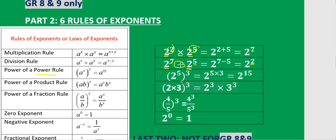Then we have the power rule: if you have an exponent inside brackets and an exponent outside the bracket, the exponent inside should be multiplied by the exponent outside. So the 5 must be multiplied by 3, giving you 15.